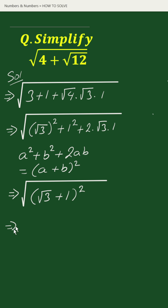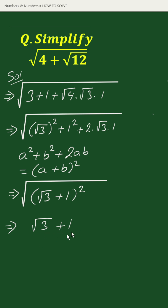This equals to: square root of (square root of 3 plus 1) whole square will be square root of 3 plus 1. Therefore, our simplified answer to the given problem is square root of 3 plus 1. This is your solution.